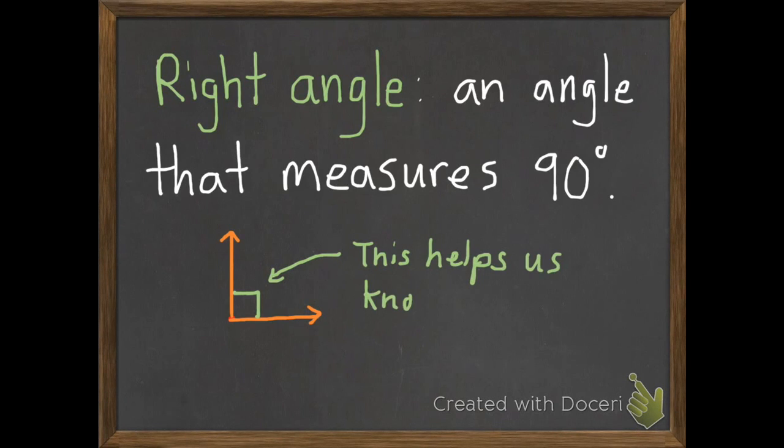We put this little square here instead of a little part of a circle, and that helps us know it's a right angle. So if you ever see that little square, you know it's going to be a 90 degree angle which is called a right angle. And this would be the same as a one-fourth turn from yesterday's lesson.